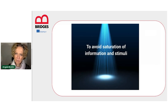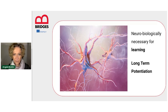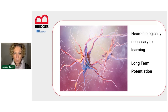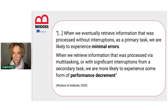But this is not just a matter of saving cognitive resources. Attention is biologically necessary for learning. What we commonly call learning, in neurobiological terms, is called long-term potentiation, which is a neurobiological process that basically consists of an increase in synaptic activity between neurons. For this increase to occur, mental focus is needed, especially if we are talking about conscious and voluntary learning. It's only through mental focus that the neural activity associated with the stimulus I'm focusing on will amplify and project into the prefrontal cortex and generate long-term potentiation. Wickens and Holland found experimental evidence confirming that when we retrieve information processed without interruption as a primary task, we are likely to experience only minimal errors. But when we retrieve information that was processed via multitasking or with significant interruptions from a secondary task, we are more likely to experience some form of performance decrement.